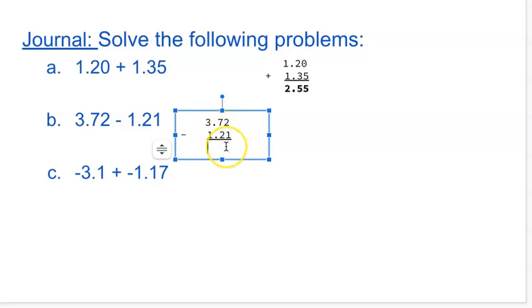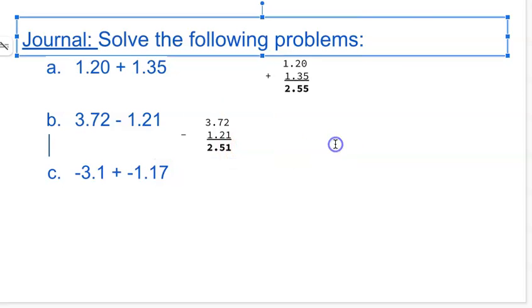2 minus 1 is 1, 7 minus 2 is 5. Bring down the decimal. And then 3 minus 1 is 2. So that is our answer, 2.51.